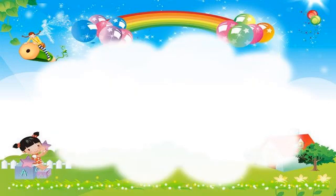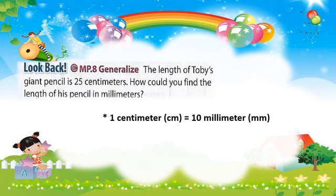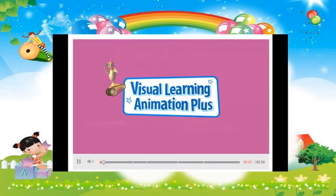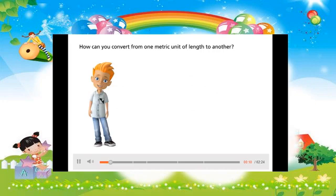Let's move on to the look back. The length of Toby's giant pencil is 25 centimeters. How could you find the length of his pencil in millimeters? Remember the conversion unit: 1 centimeter equals 10 millimeters. So we are going to multiply 25 by 10 to convert it to millimeters. How can you convert from one metric unit of length to another? Let's find out.